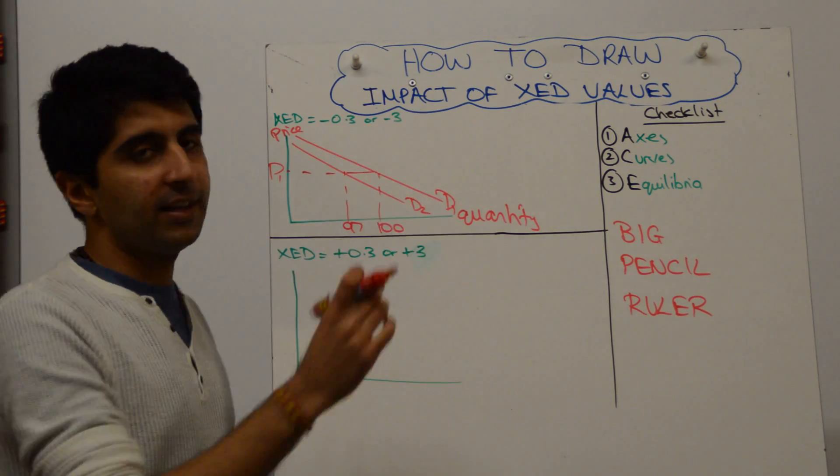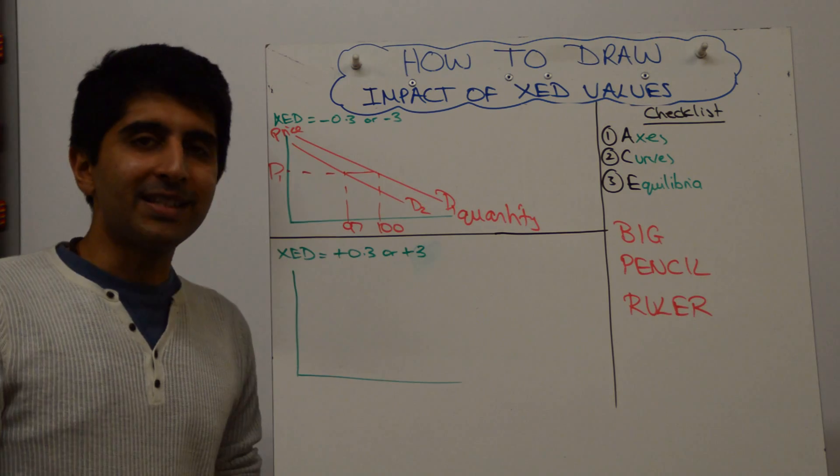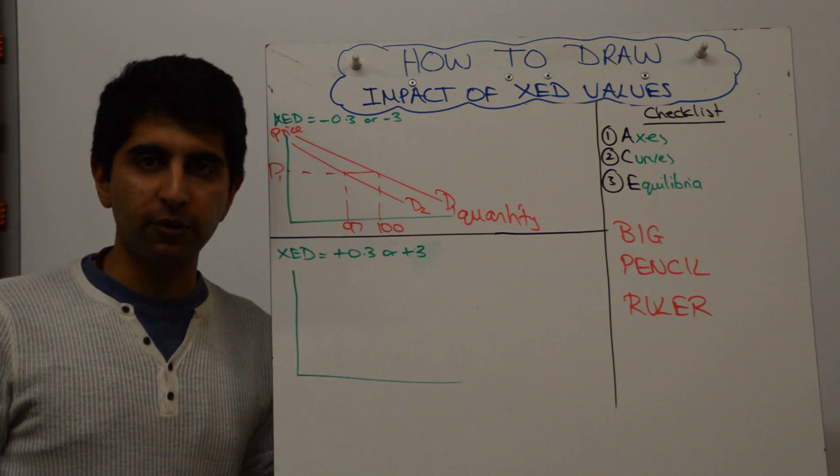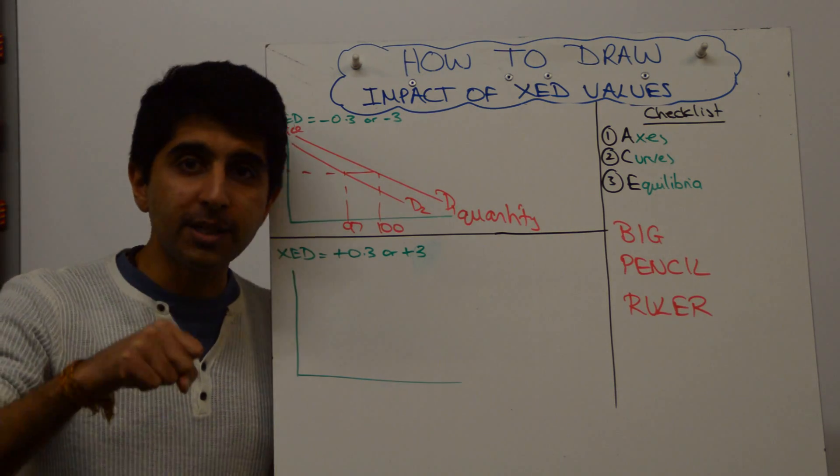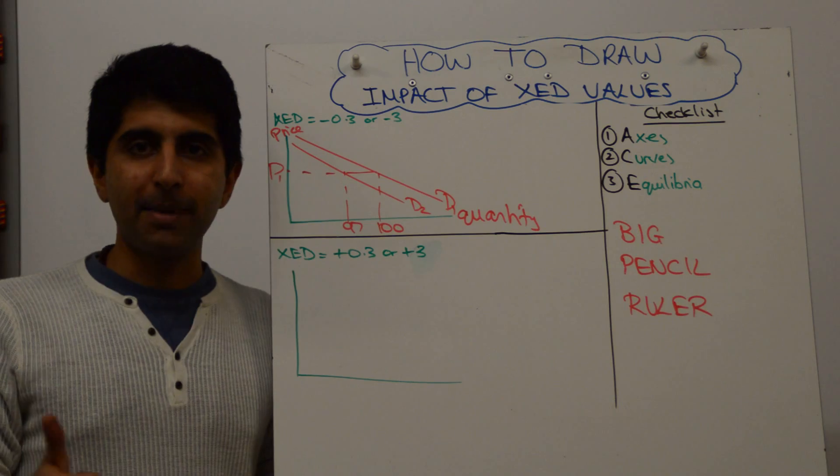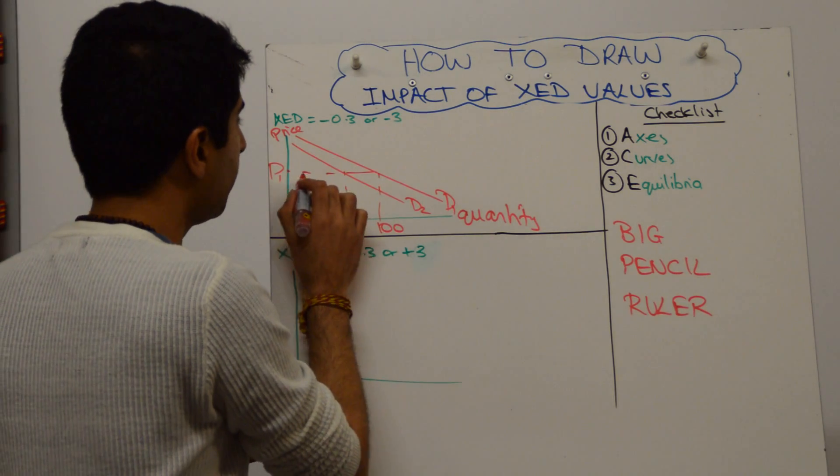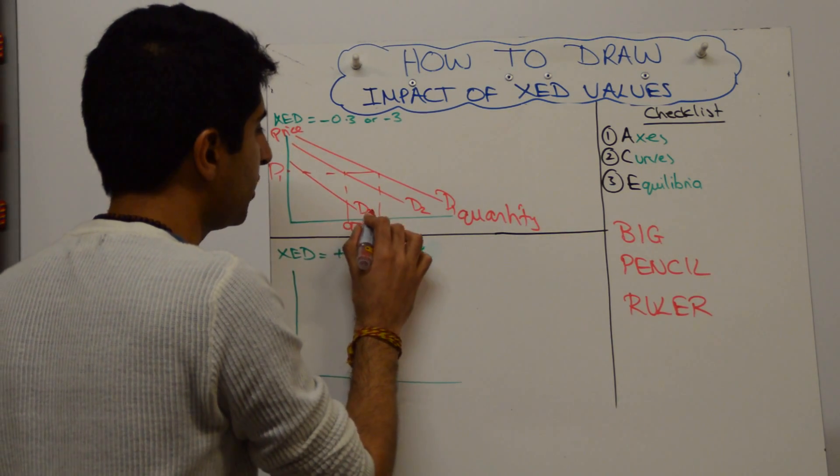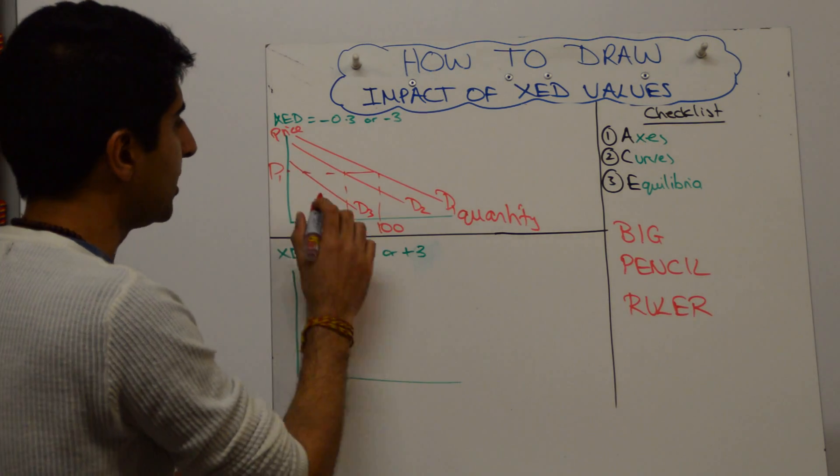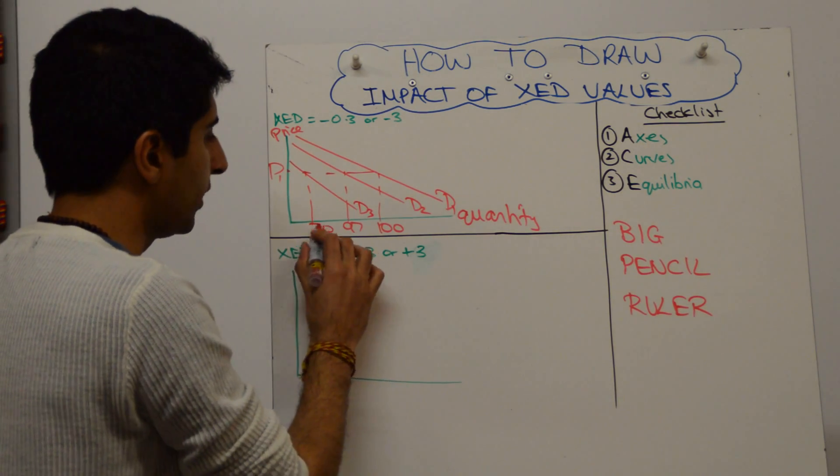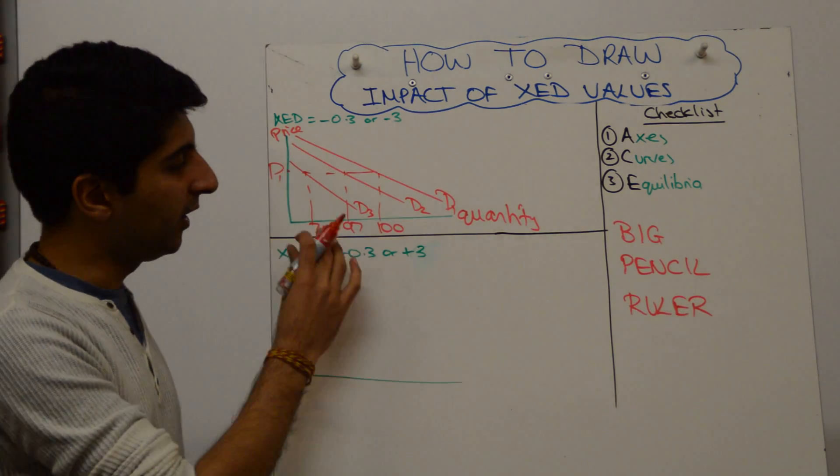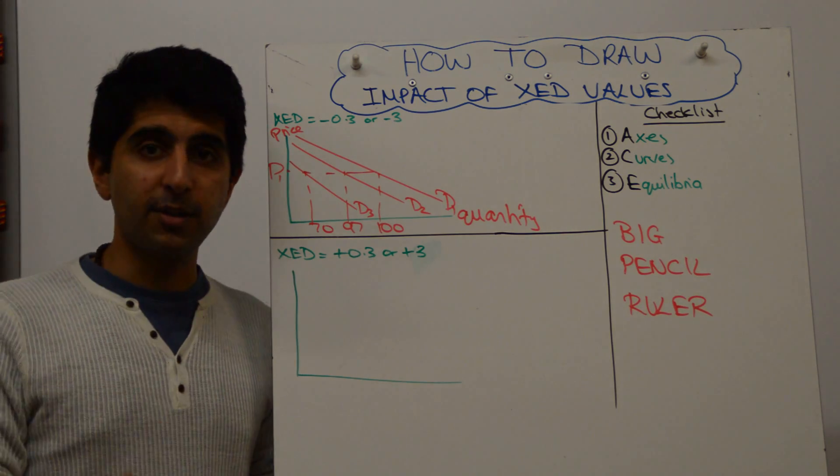But let's say the XED value is minus 3, then a 10% rise in the price of Nespresso machines will lead to a 30% fall in the quantity demanded of Nespresso capsules, which will lead to a much greater shift to the left of demand, from D1 to maybe D3, which, forget the scale which is off here, which will take us to 70. That's a 30% decrease.